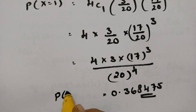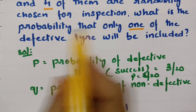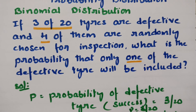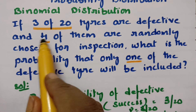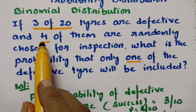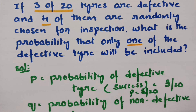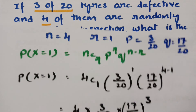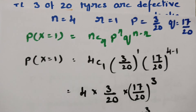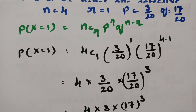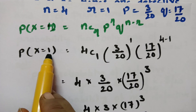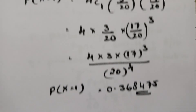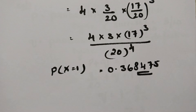So the probability of getting exactly one defective tire is 0.368475. To summarize: with P = 3/20, Q = 17/20, N = 4, and R = 1, applying the binomial formula NCR × P^R × Q^(N-R) gives us a final answer of 0.368475. Thank you so much for watching.